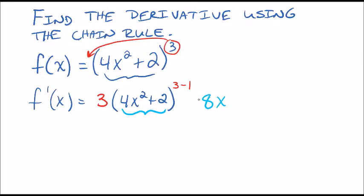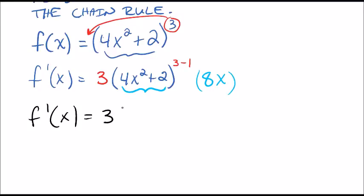So in our case here, let's go ahead and simplify this down. Derivative here is then 3 times 4x squared plus 2. 3 minus 1 becomes 2 times 8x.